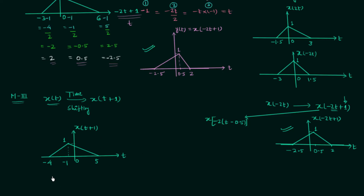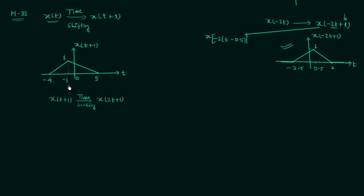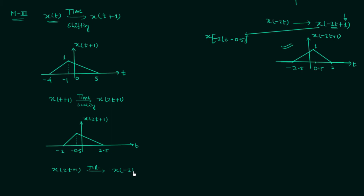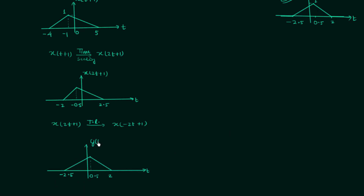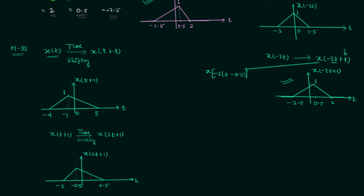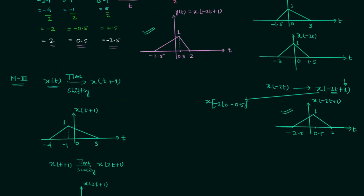Now we perform time scaling: dividing minus 4 by 2, minus 1 by 2, and 5 by 2, causing compression of the signal. Then we perform time reversal of X(2t + 1) to obtain X(-2t + 1) by taking the mirror image about the y-axis. The resulting waveform of y(t) is identical to the waveforms obtained in methods 1 and 2. In all three methods we obtained the same answer, confirming the process is correct.